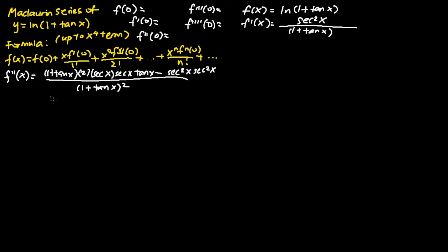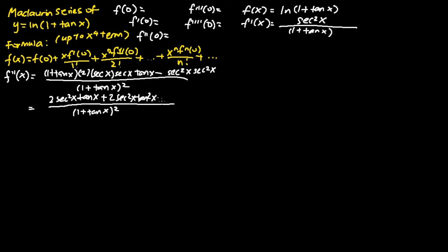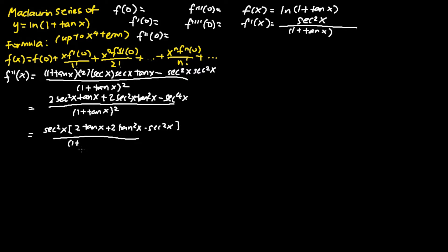In this particular case, we are applying the quotient rule of differentiation. We simplify the fraction, and in the denominator we keep it as is. In the numerator, we simplify to get 2 sec squared x tangent x plus 2 sec squared x tangent squared x, subtracting away sec to the power of 4 x. From here, I factorize sec squared x to get 2 tangent x plus 2 tangent squared x minus sec squared x, over (1 plus tangent x) squared.